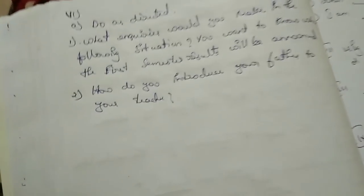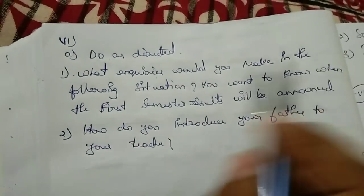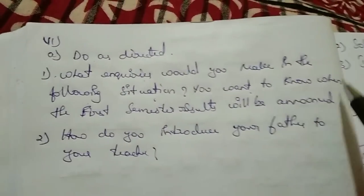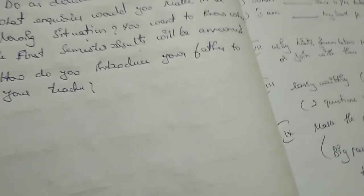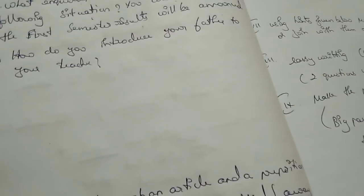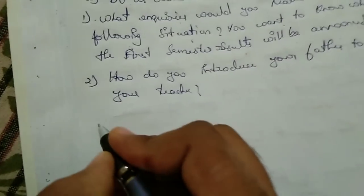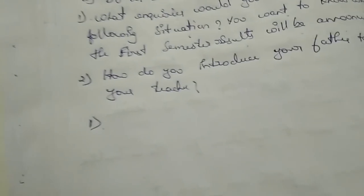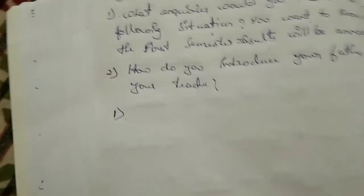Someone asked me to do this question, so I'm doing it. See here: 'What inquiries would you make in the following situation?' We have to write an inquiry for a particular situation. For example: you want to know when the first semester result will be announced. First understand the question — you need to find out when the first semester result will be announced. Think about who you will ask: the office, the teachers, or friends. You should ask the office.